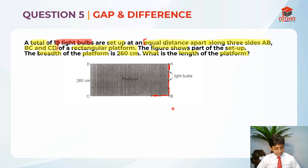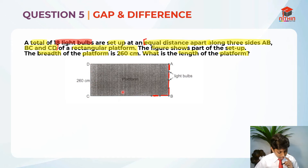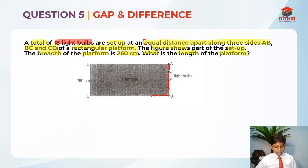This is our rectangular platform. The breadth of the platform is 260 cm — this is the breadth. They are asking us to find the length, which is BC.